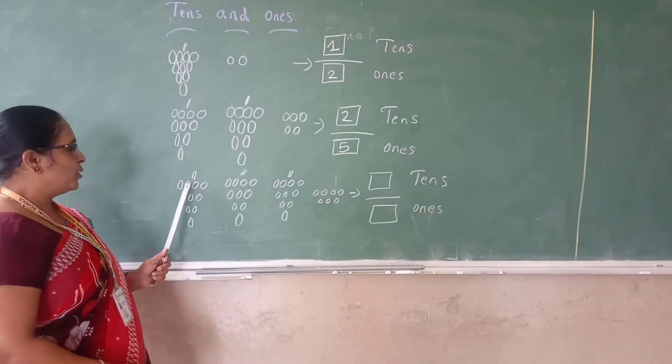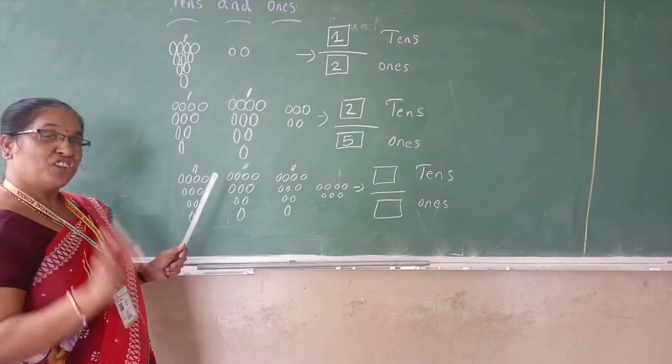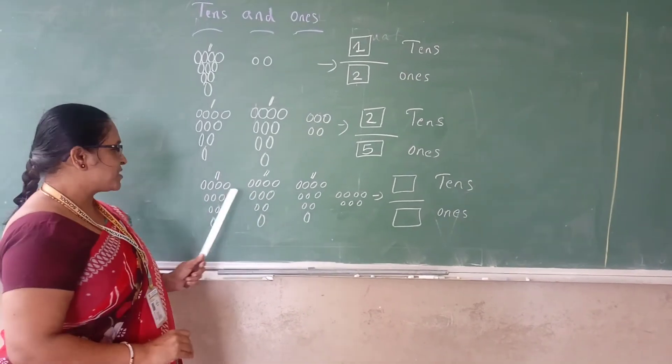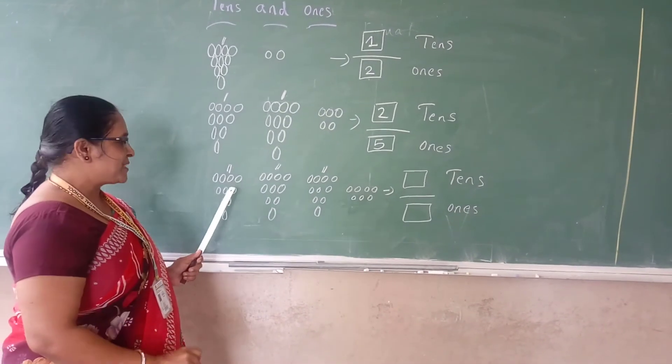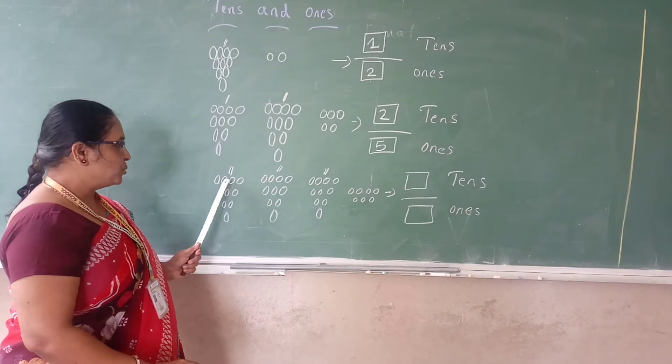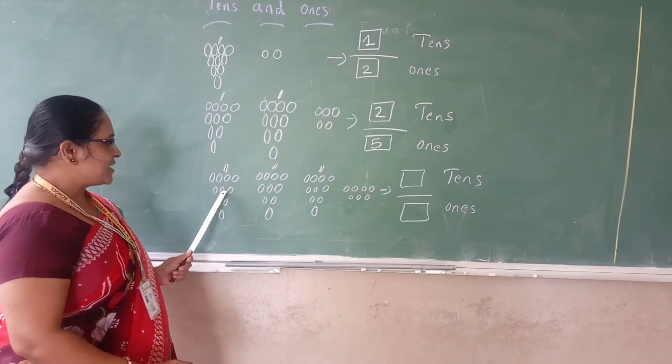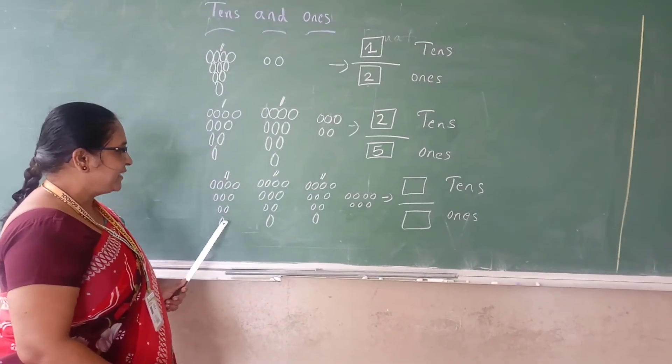Now, we will show you all. All the groups are there here, 3 groups. Very good. How many groups are there here? 3 groups. In one loop, how many are there here? 1, 2, 3, 4, 5, 6, 7, 8, 9, 10.